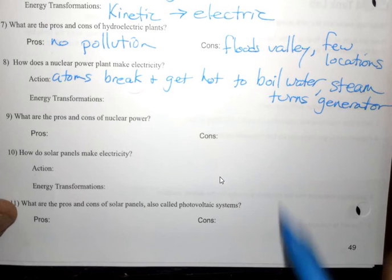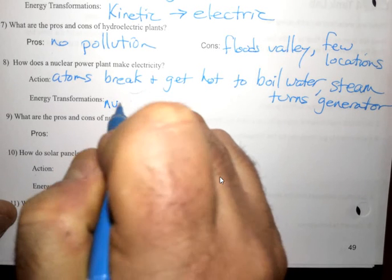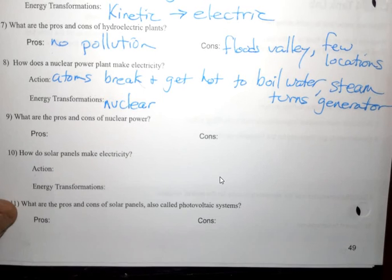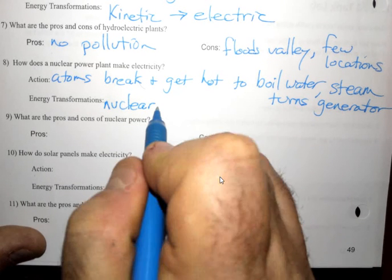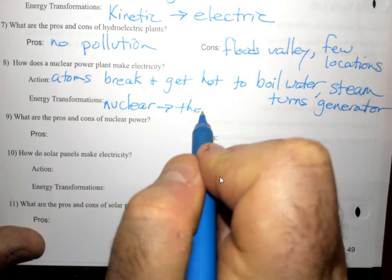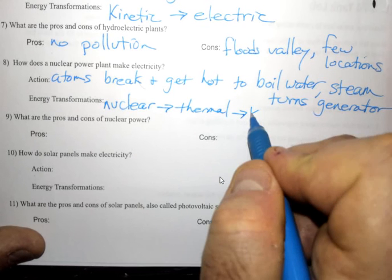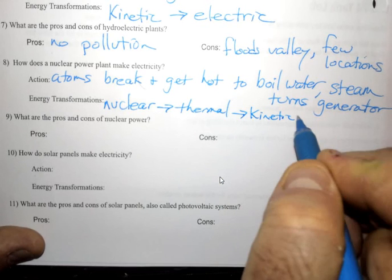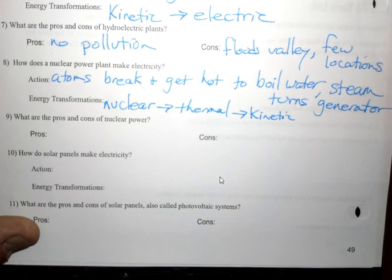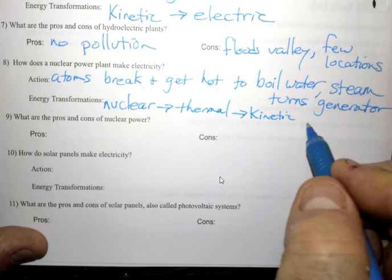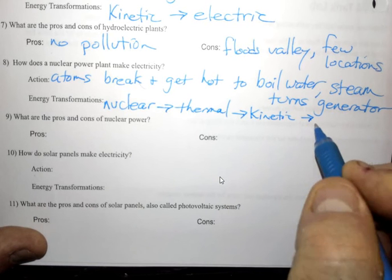Energy transformations, then. We start off with nuclear energy, that's the stuff that holds the protons together in the nucleus. That turns into thermal energy, the hot water, hot steam, which turns into kinetic energy of the moving steam, moving turbine, moving axle, moving magnets. And then, finally, to electric.